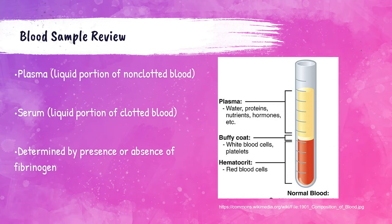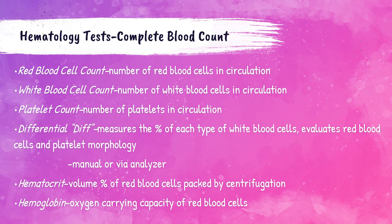One of the main tests performed in the hematology department is the CBC or complete blood count. This determines how many white and red blood cells are present, the platelet count, and also hemoglobin and hematocrit. The CBC can also include a differential, which determines the distribution of white blood cells — differentiating types such as neutrophils and lymphocytes. Hematocrit is the volume percentage of red blood cells in the blood, and hemoglobin measures the oxygen-carrying capacity of the red blood cells.